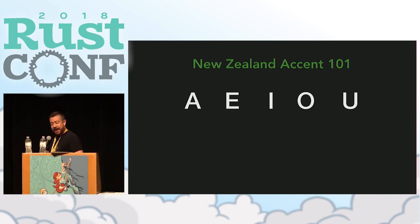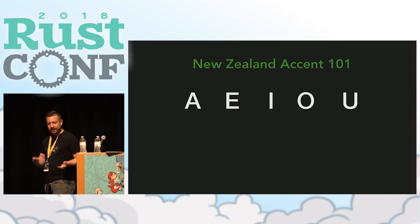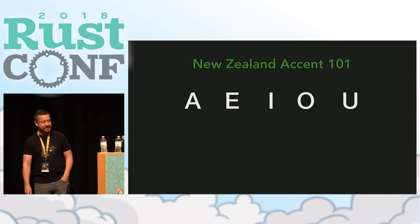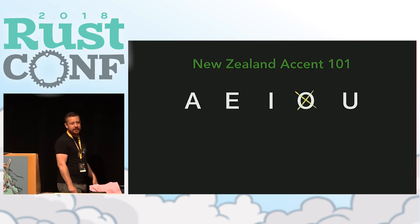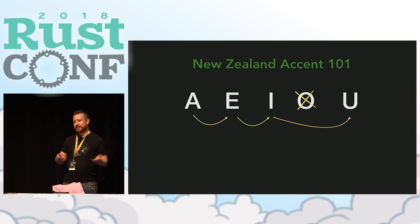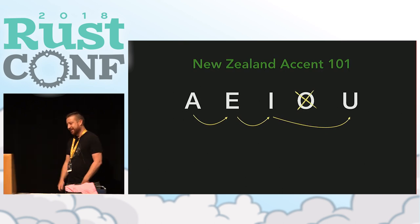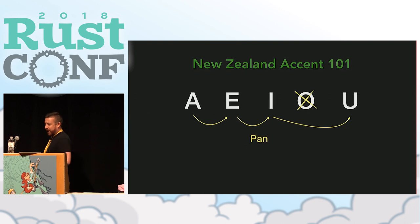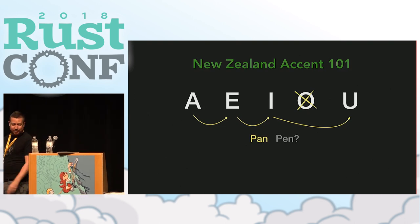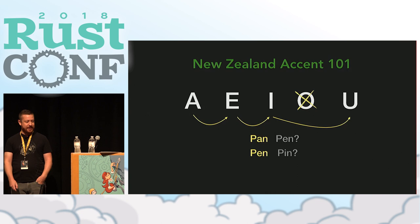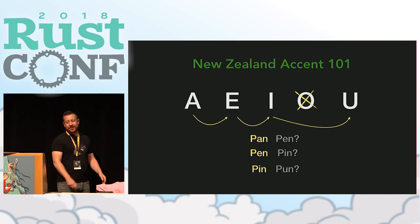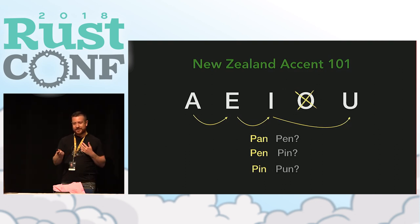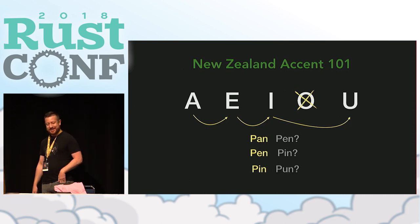I've been told that my accent's hard to understand, so I thought I would start off by giving a little bit of a 101 on the New Zealand accent. Essentially, if you take the vowels, you take out the O and move the sounds of the vowels over one — that's the New Zealand accent. So if you're hearing the word in yellow, you're going to be good, but if you're hearing the word on the right, you may need to reverse engineer what I'm saying.